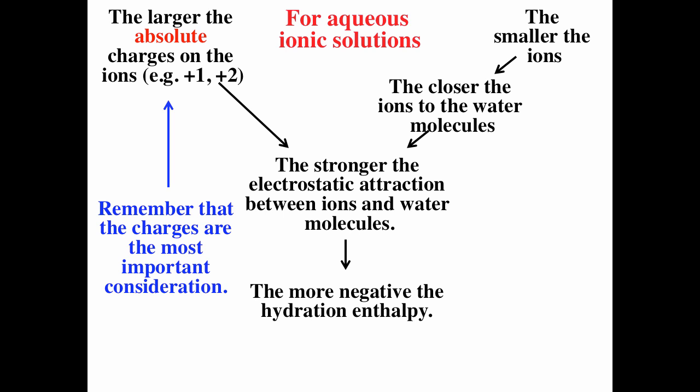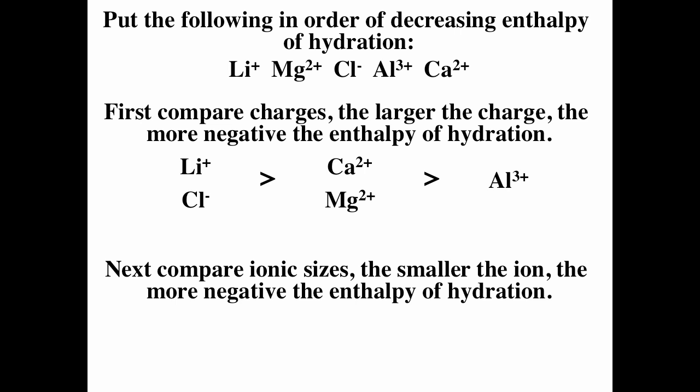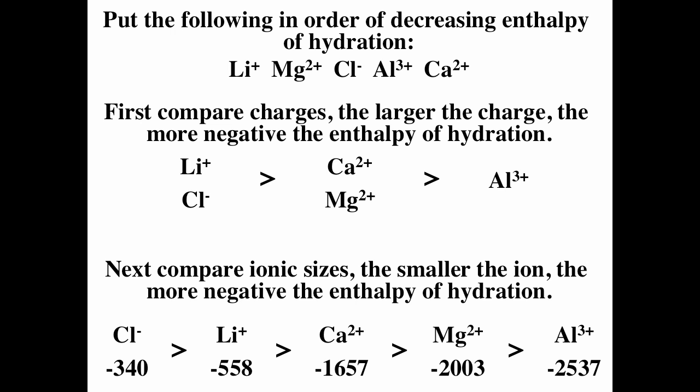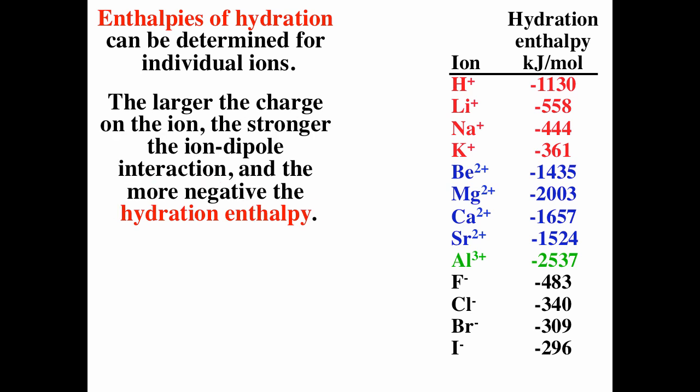The charges are the most important factor. If asked to put ions in order of decreasing hydration enthalpy, first rank by absolute charge. The +3 ion has the biggest charge, then the +2 ions, then the +1 ions. Once ordered by charge, rank by size. Between calcium and magnesium, magnesium is smaller and has a more negative hydration enthalpy. Between lithium and chloride, lithium is smaller. Looking at a table of hydration enthalpies, the +3 is most negative, then the +2 ions, then the +1 ions — confirming that charge comes first, then size.